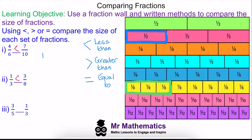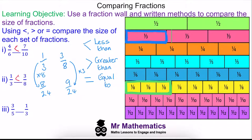We can check this using equivalent fractions, this time with a common denominator of 24. We'll multiply one third by eight to make eight over 24, and we'll multiply three eighths by three to make nine over 24. Again, you can see that eight twenty-fourths is the smaller of the two.